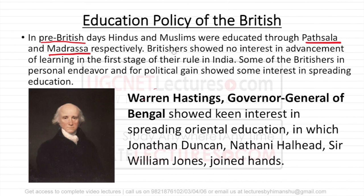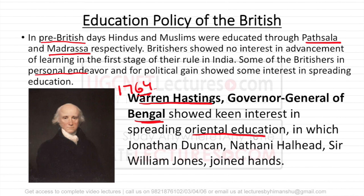Initially, the Britishers did not show any interest in learning because their main motive was to get profit out of India — they were a trading company. Still, there were some people who showed interest in education. The first person we can say who showed interest in education in India was Warren Hastings. He got the full rights to trade and administration in Bengal after the Battle of Plassey in 1764 from the Mughals, and he showed some interest in Oriental education. Oriental education means the original education of India, in which Jonathan Duncan, Nathalie, and Sir William Jones helped him.